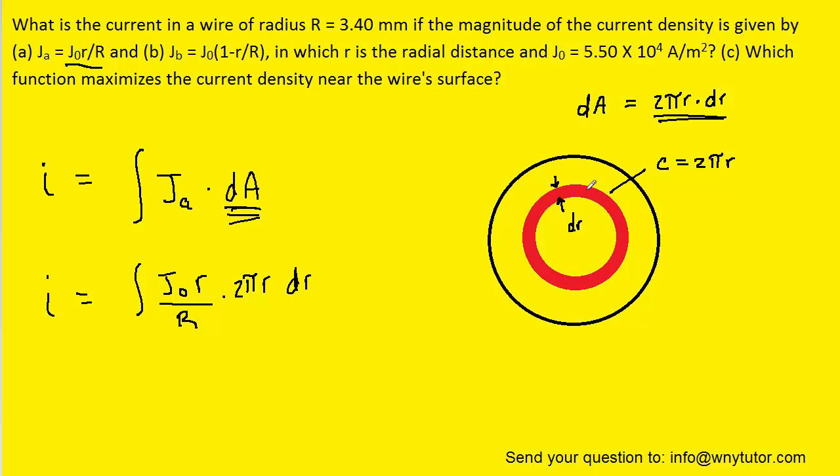Now of course that thin ring that we drew was only one differential element. We actually need an infinite number of them. So we need to integrate essentially from a differential element of radius 0 out to a differential element of radius R. So in other words, our limits of integration will be from 0 to R.